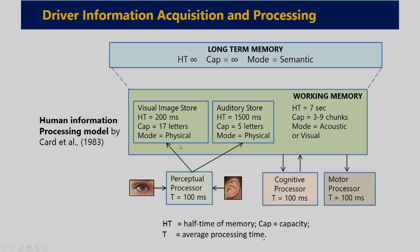That information goes to working memory and is stored as visual or auditory information. The half time of visual information is 200 milliseconds and its capacity is 17 items. For auditory information, the half time is 1,500 milliseconds. The average half time of working memory is 7 seconds, its capacity is 3 to 9 chunks of information, and its mode is acoustic or visual. From working memory, information may reach long-term memory, where the half time is infinite — once stored there, it is stored permanently with infinite capacity, as semantic memory.